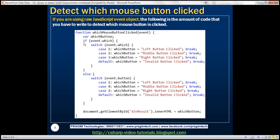That block of code is for IE9 or a later version or any other modern browser. If the browser does not support the which property of the event object, then we know it is IE8 or an earlier version. In that case it goes to the else part, where we switch on the button property of the event object. We know this button property returns one of three values: one for left, four for middle, two for right. If it's none of those, it falls to the default, setting the variable to 'invalid button clicked'.